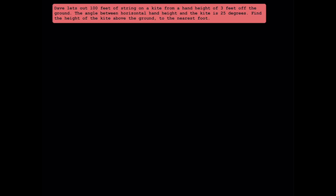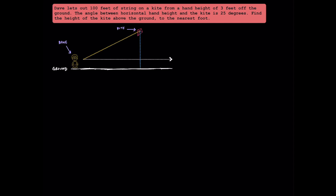Let's try another one together. Pause the video and read the question to yourself, and try to draw a diagram and set it up. Unpause the video to see if we have the same diagram. Here's my diagram, and I'm going to label the parts that I know. The string length is 100 feet long. We know that he's holding the string from 3 feet off the ground, and we know the angle of elevation is 25 degrees. Since we're being asked for the height off the ground, we're going to have to find the vertical distance from the height of Dave's hand to the height of the kite. We're going to call that x here, and the height off the ground is going to be represented by the expression x plus 3.